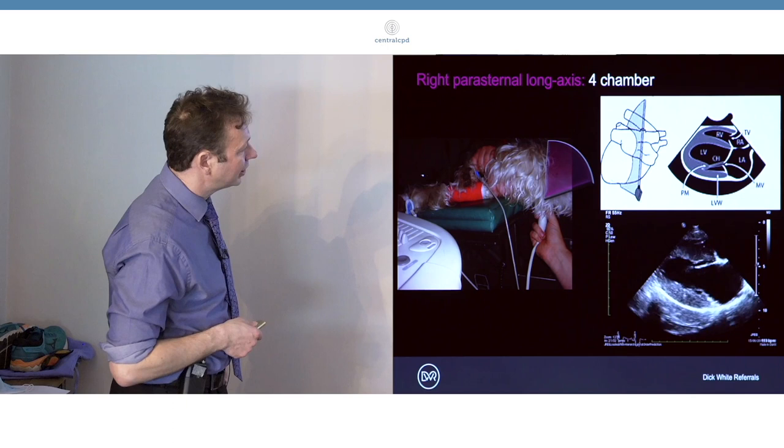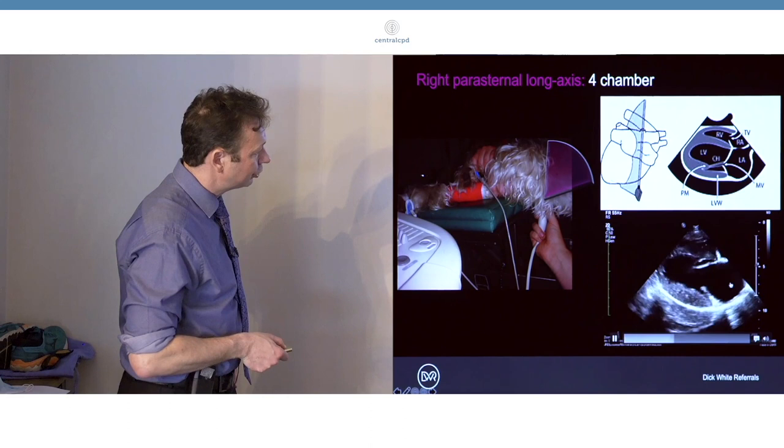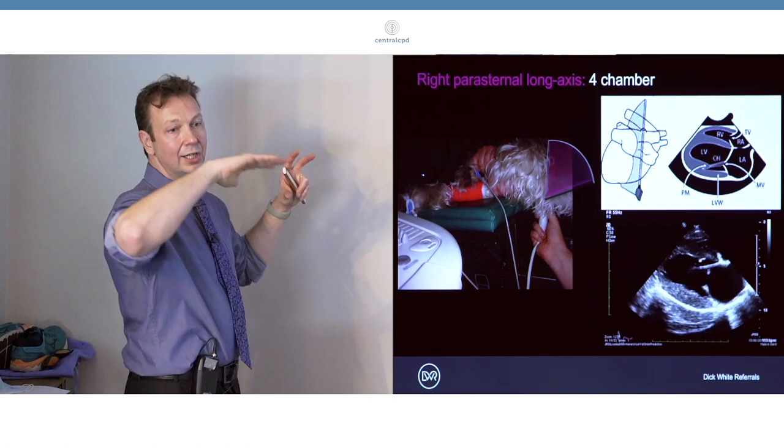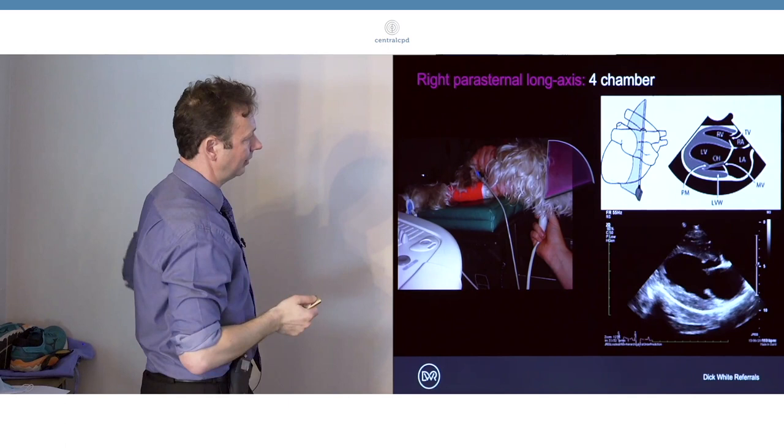So this is what our four chamber view looks like. On our image we've got the left atrium to the right of the image. Conventionally we want to orientate the probe so that our image has the dorsal and cranial structures to our right when looking at an ultrasound image.